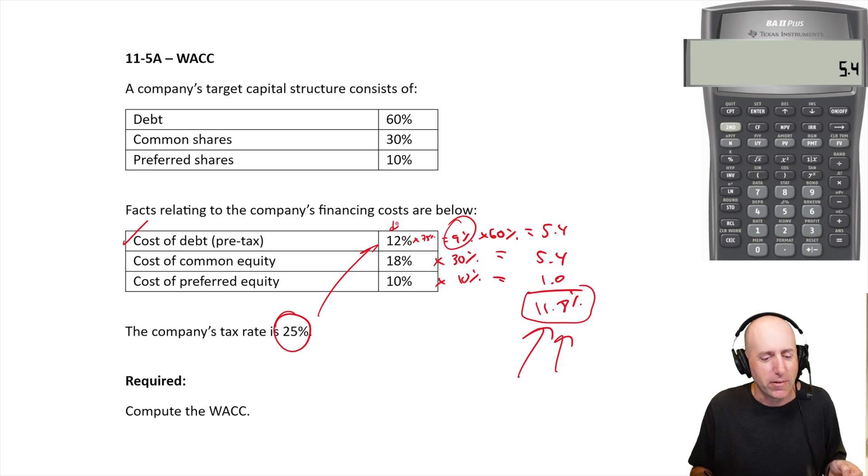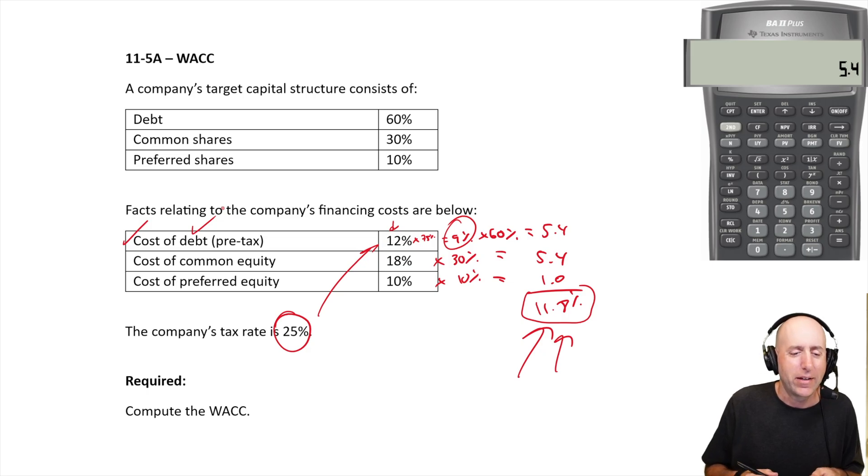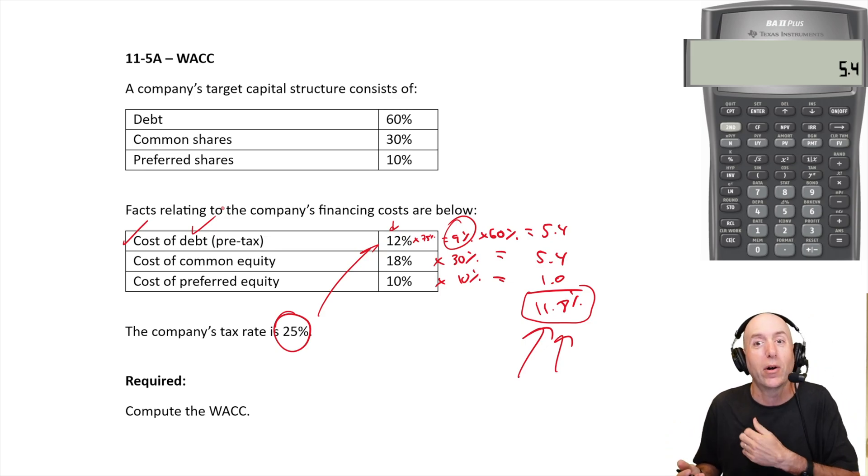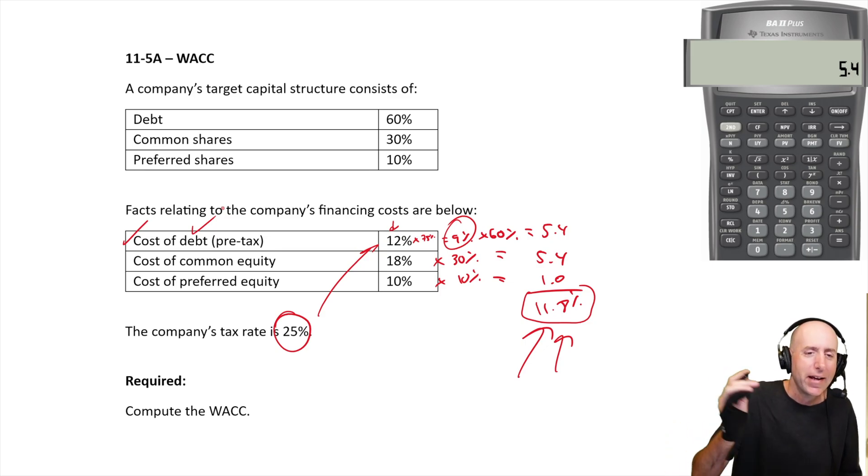You change a variable significantly and it can throw the whole thing out of whack. Your bankruptcy risk is just through the roof. Debt is cheap, so almost always students ask, well why don't we just take on more debt? The answer is because your cost of debt will go up as you take on more debt. Anyway, there we have it - we've solved 11.5A.